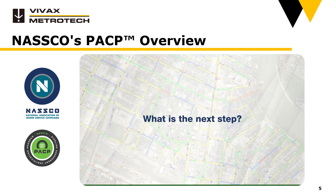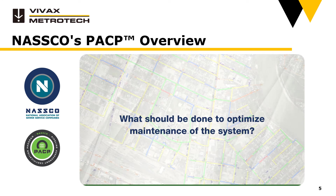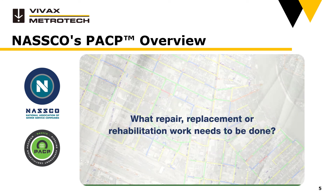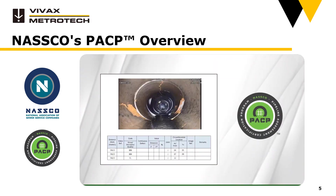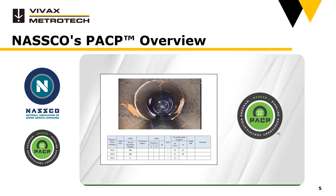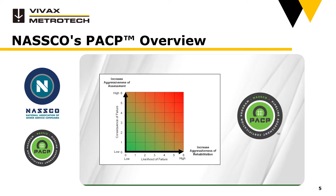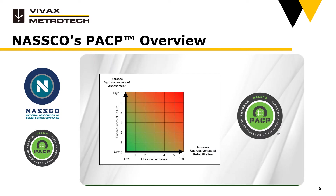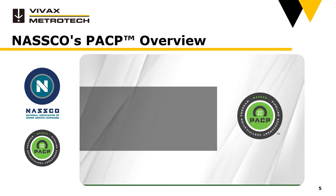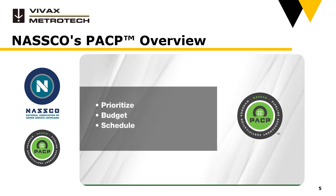There is always a next step. What should be done to optimize maintenance of the system? What repair, replacement, or rehabilitation work needs to be done? How much does it cost? By utilizing PACP to answer these questions, utilities will have access to fact-based data to ascertain the state of each asset in the system. This allows utilities to efficiently assess the condition or likelihood of failure of each asset. Along with determining the consequence of failure and any mitigation efforts to determine the business risk exposure, the utility can prioritize, budget, and schedule various operation, maintenance, renewal, or replacement tasks over time.